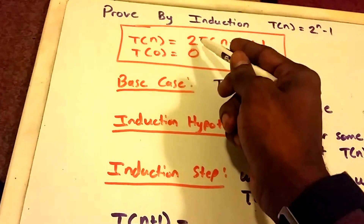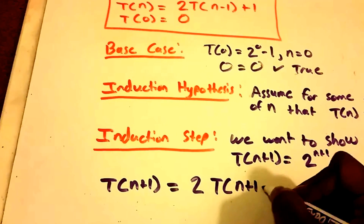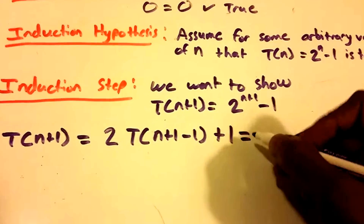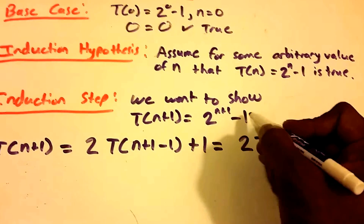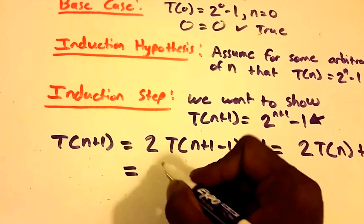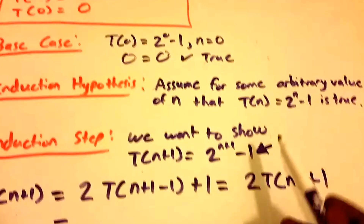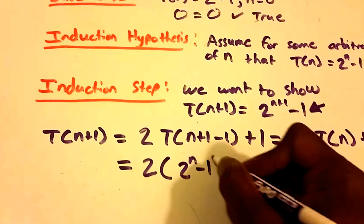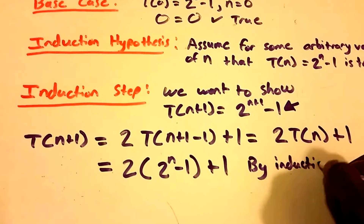Using our recurrence, T(n+1) equals 2 times T(n+1-1) plus 1, which simplifies to 2 times T(n) plus 1. By the induction hypothesis, T(n) equals 2^n minus 1, so we substitute to get 2 times (2^n minus 1) plus 1, which equals 2^(n+1) minus 2 plus 1.